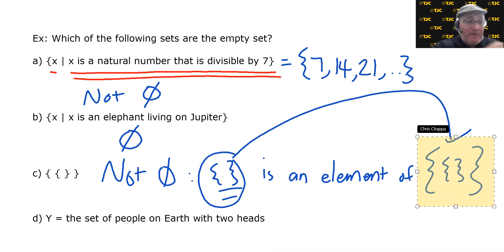Speaking of sneaky ones. D, Y is the set of people on Earth with two heads? If this is empty, what does that mean? It means that no one on Earth has two heads. So, what do you think? You think it's empty? Because if you say no, you're telling me there exists at least one person on Earth with two heads. And believe it or not, such a person exists. Or rather, I say such a pair of people exist. This is not the empty set. At least not as of the recording of this video.